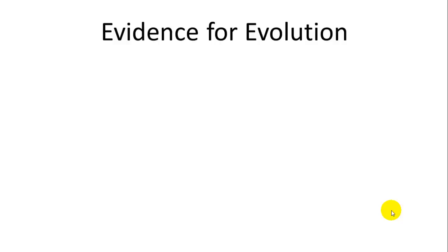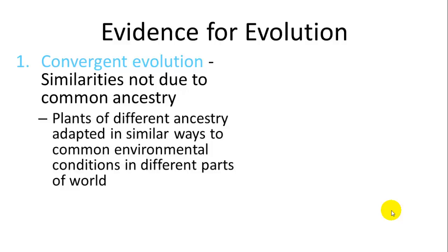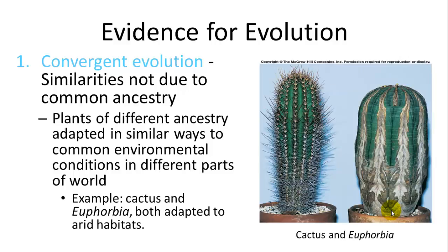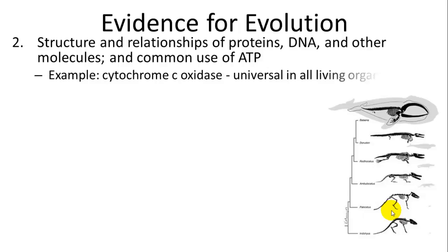There is lots of evidence for evolution — it is the best theory in biology for explaining where organisms came from. Convergent evolution shows unrelated species developing the same function under the same conditions, such as cacti and euphorbia both adapting to arid habitats independently. Structural relationships of proteins, DNA, and molecules like ATP — including cytochrome C oxidase, required for energy use — are universal across all living organisms.